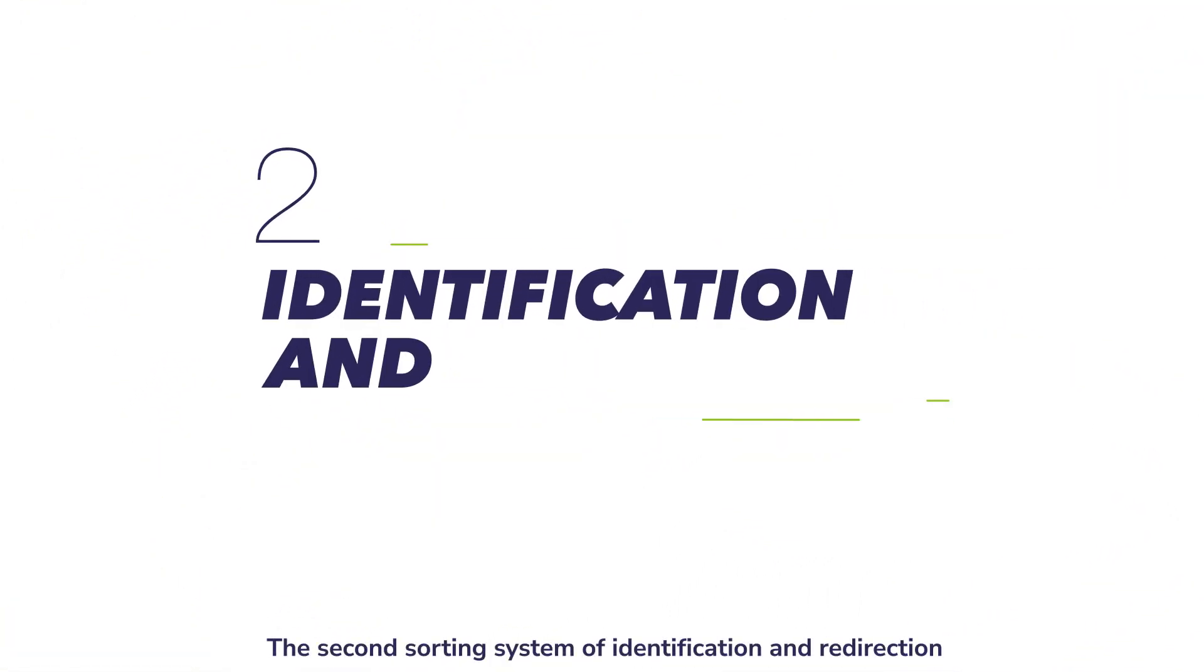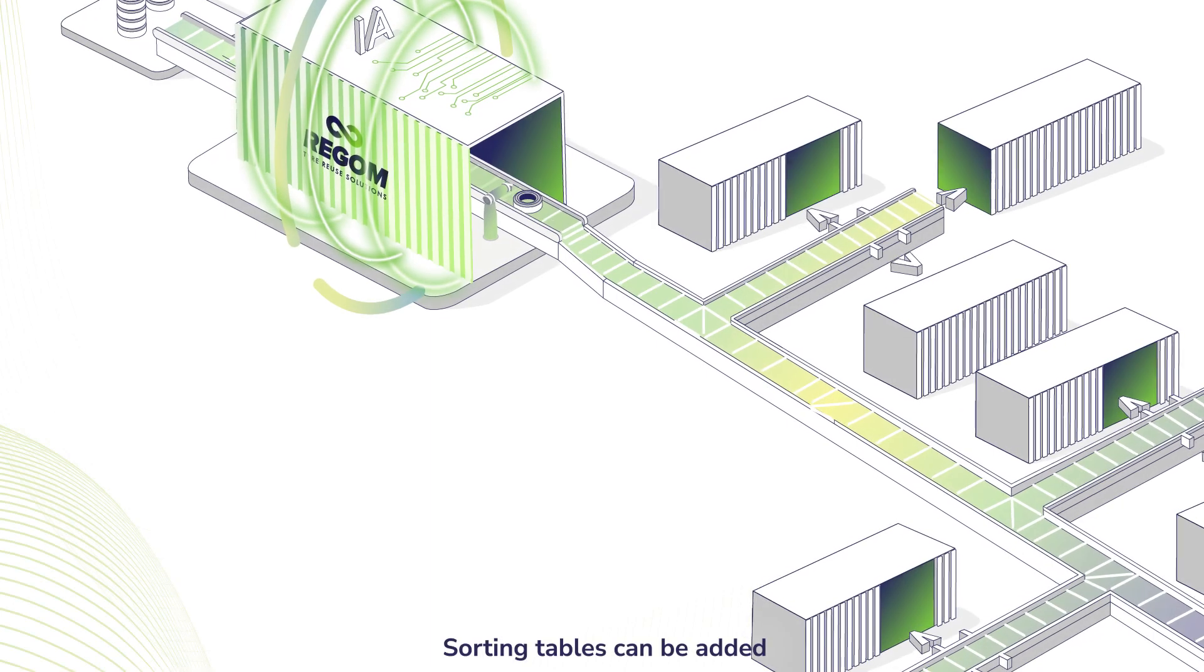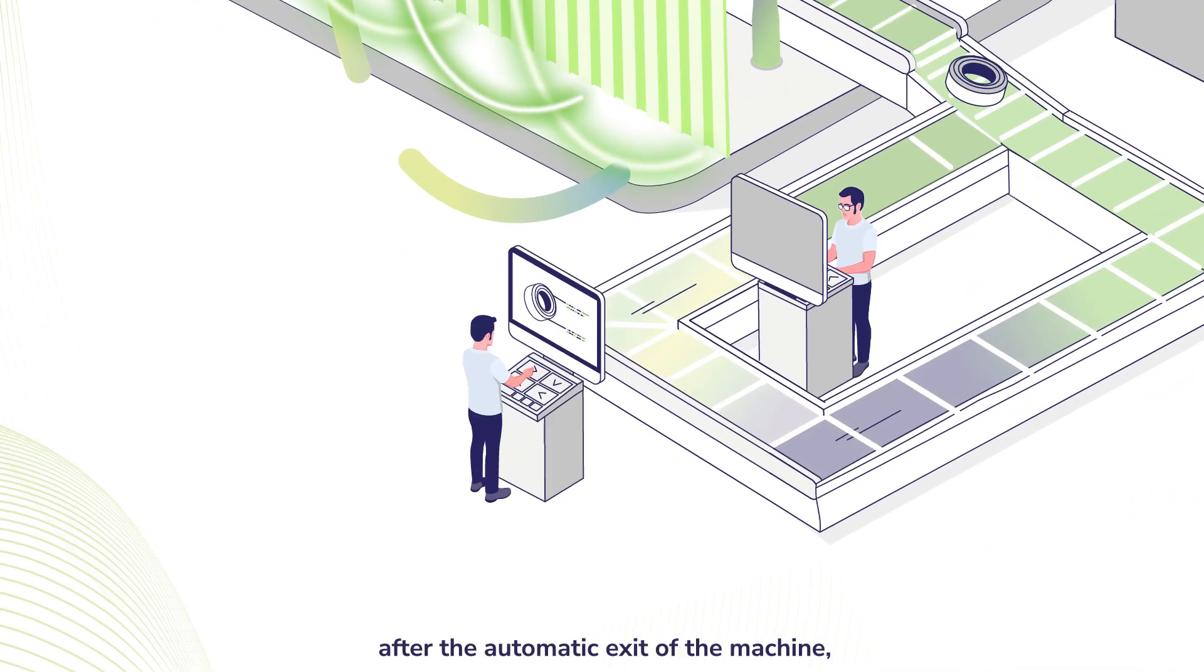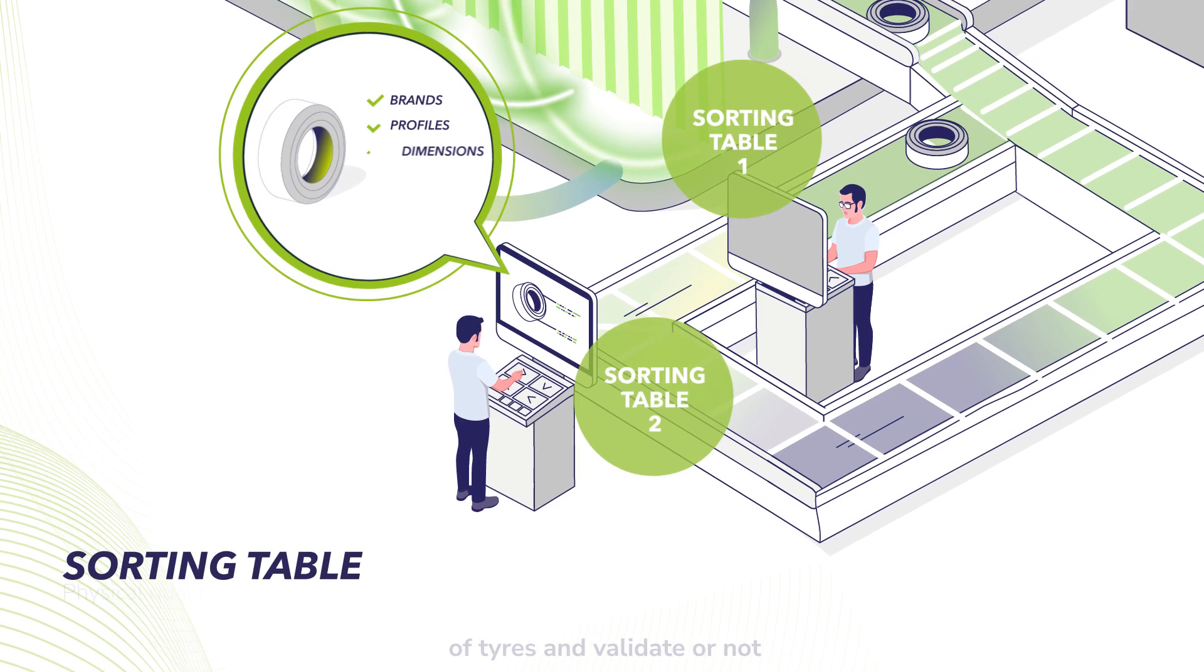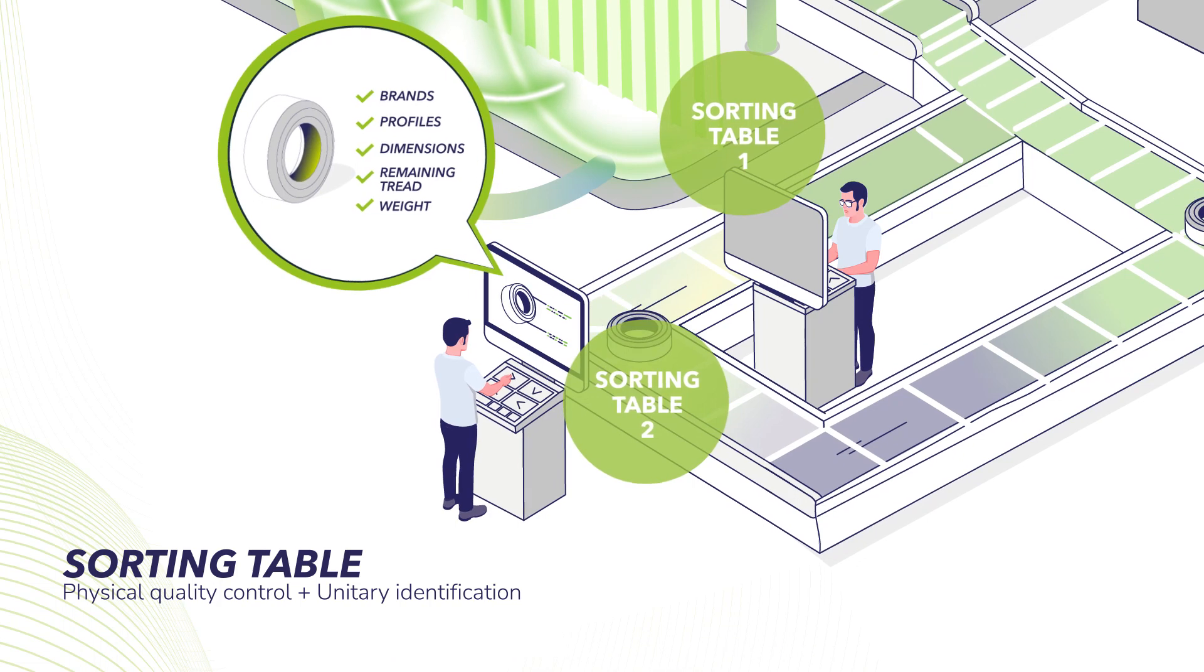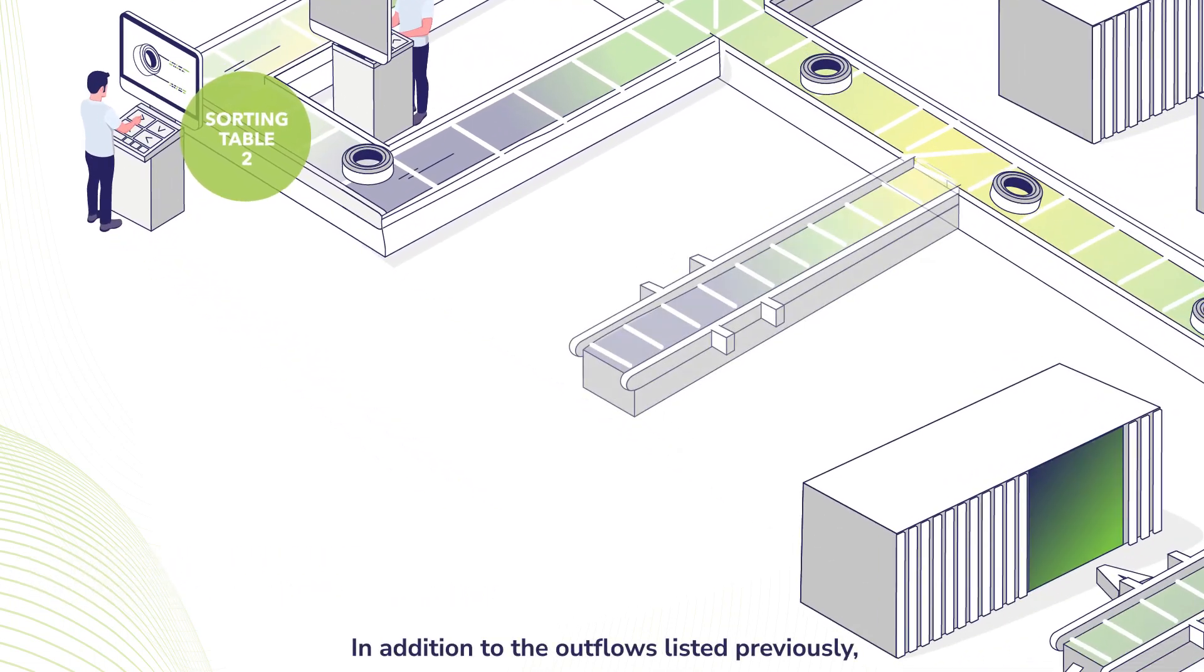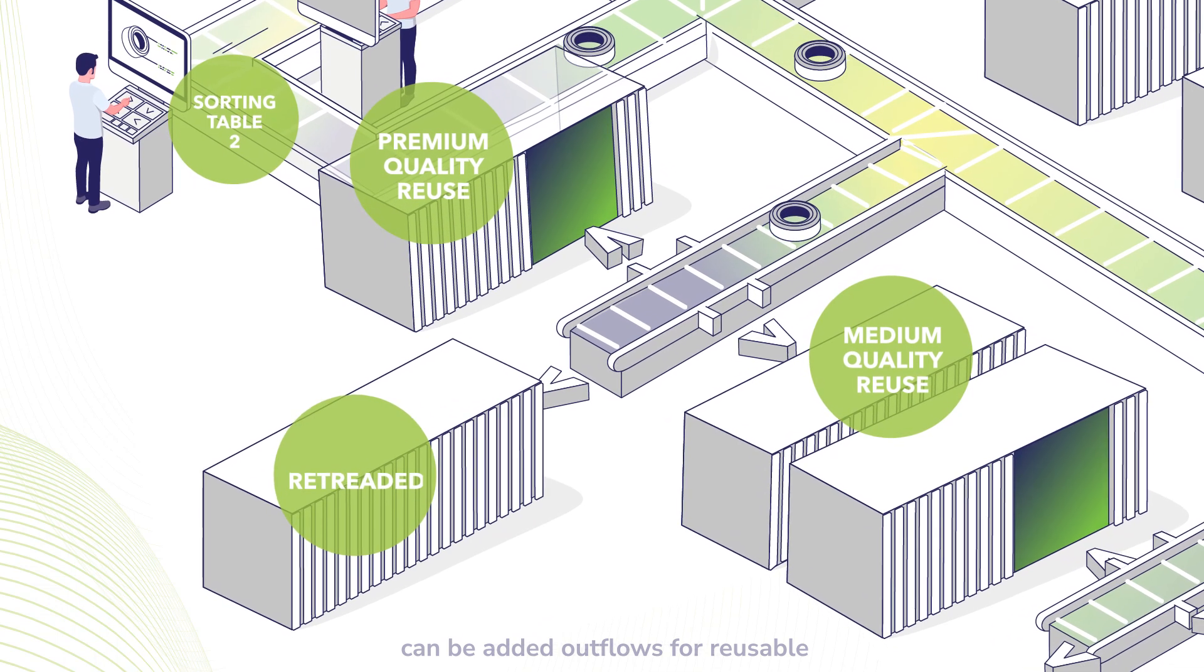The second sorting system features identification and redirection with a physical control post integrated. Sorting tables can be added after the automatic exit of the machine. They allow operators to check the physical quality of tires and validate or not the destination proposed by the machine. In addition to the outflows listed previously, outflows can be added for reusable and retreaded tires.